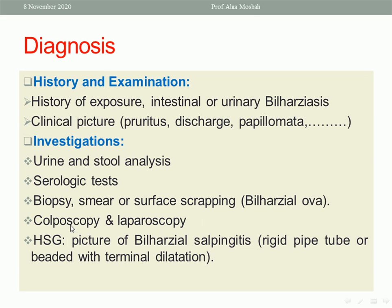We can do colposcopy to detect cervical and vaginal lesions, and we can do laparoscopy to detect peritoneal and ovarian lesions. Hysterosalpingography may be important to detect bilharzial salpingitis, which is characterized by a rigid pipe-stem tube or beading with terminal dilatation.